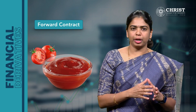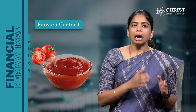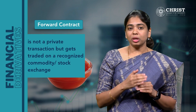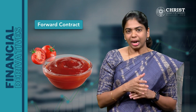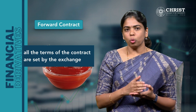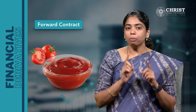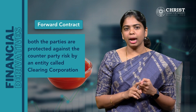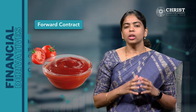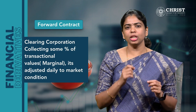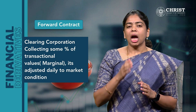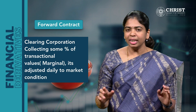In order to overcome these risks, the parties can enter into a futures contract instead of a forward agreement. Unlike a forward contract, a futures contract is not a private transaction but gets traded on a recognized commodity exchange. All the terms of the contract — the expiry date, transaction timing, minimum transaction quantity, etc. — are set by the exchange. Most importantly, both parties of the futures contract are protected against counterparty risk by an entity called the clearing corporation. The clearing corporation collects a certain percentage of the total transaction value as margin money from both parties, and this margin money is adjusted daily to market conditions.